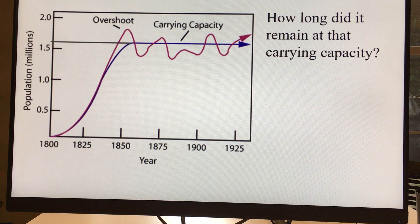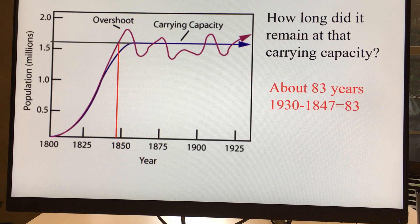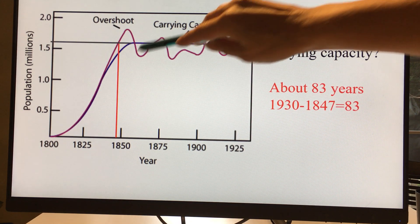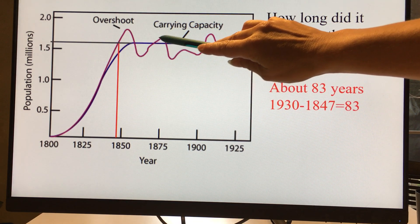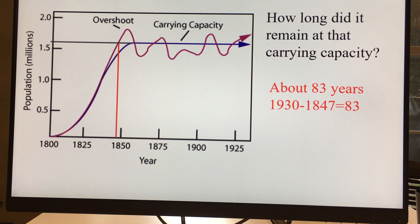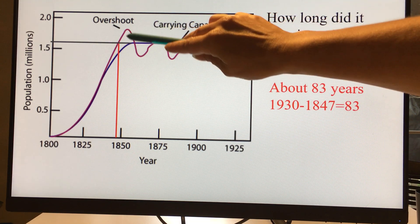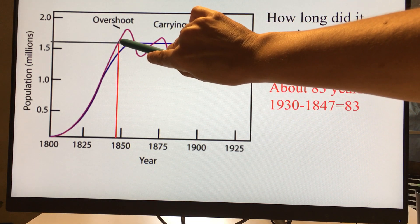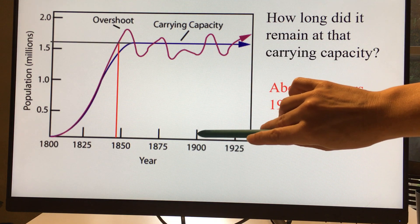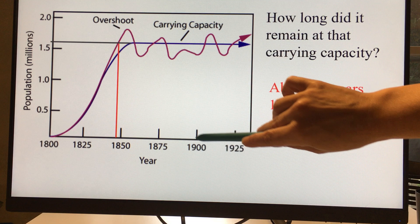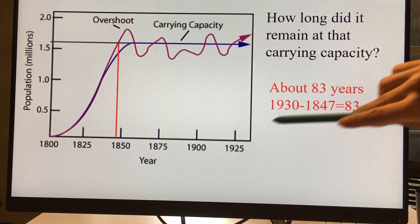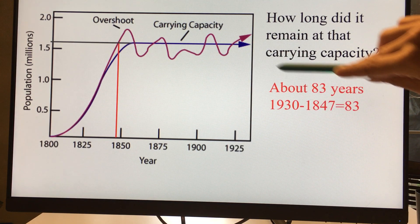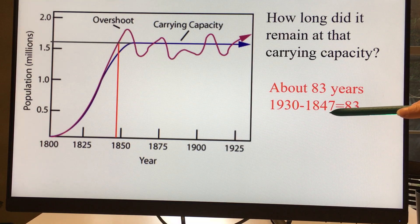If we ask how long did it remain at that carrying capacity, that answer would be about 83 years. It's very common for students to think it reached the carrying capacity here and then reached it again here as separate events. But remember, the population is going to fluctuate above and below the carrying capacity even in a basically stable population, so it's been at this carrying capacity for this entire time. Each tick mark is 25 years, so 1930 minus 1847 gives us 83 years.